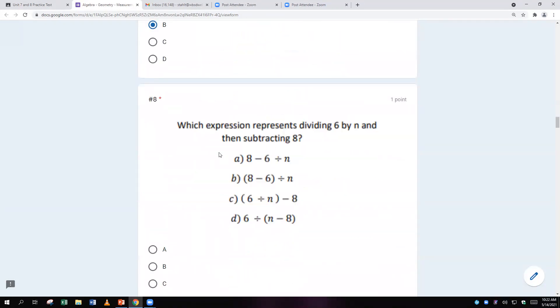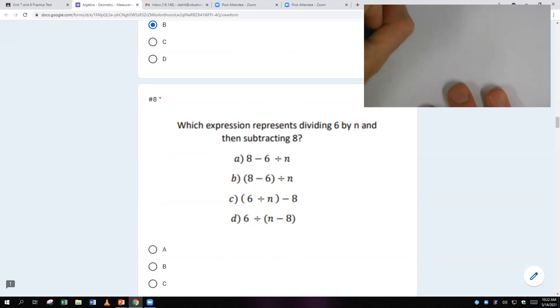Which expression represents dividing 6 by n and then subtracting 8? Dividing 6 by n and then subtracting by 8. Divide 6 by n and then subtract 8. So 6 divided by n minus 8 is the right answer. And I see that right here. And they put parentheses. You don't necessarily have to put parentheses because you would divide first anyways, but C works.